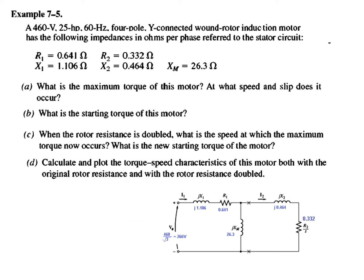Let's go to example 7.5. The motor specifications are: voltage is 460 volts, 25 horsepower, 60 hertz, 4 pole, Y-connected, wound rotor induction motor with the following impedances.